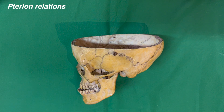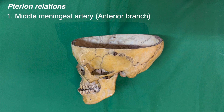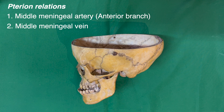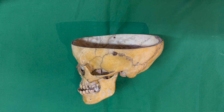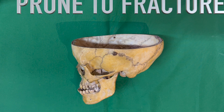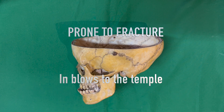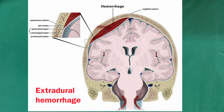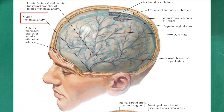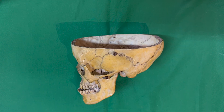Deep to the pterion lies the anterior branch of the middle meningeal artery, the middle meningeal vein, and deeper still, the stem of the lateral sulcus of the cerebral hemisphere at the sylvian point, dividing into three rami. The pterion marks an especially thin area of bone, which is prone to fracture in blows to the temple. Fractures here lead to extradural hemorrhage, typically of the anterior branch of the middle meningeal artery, compressing the motor area and resulting in contralateral hemiparesis.